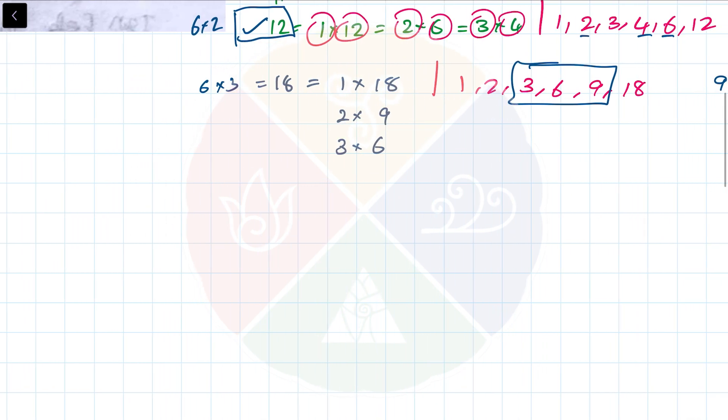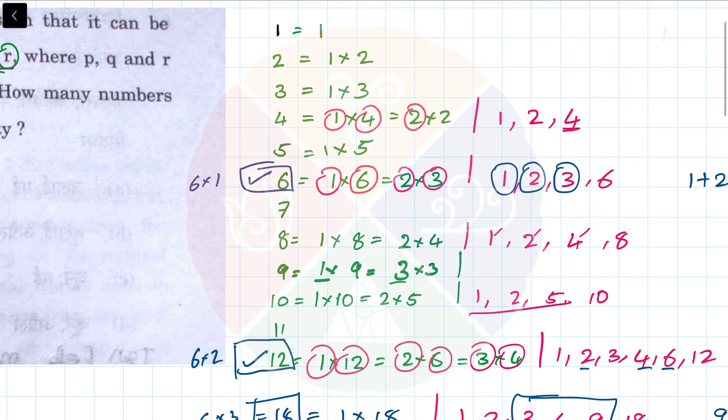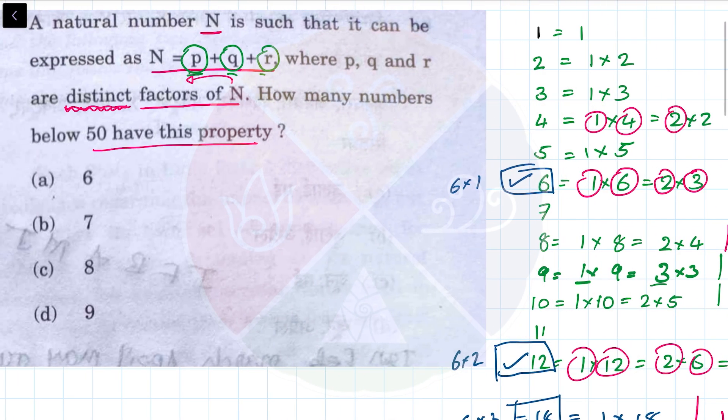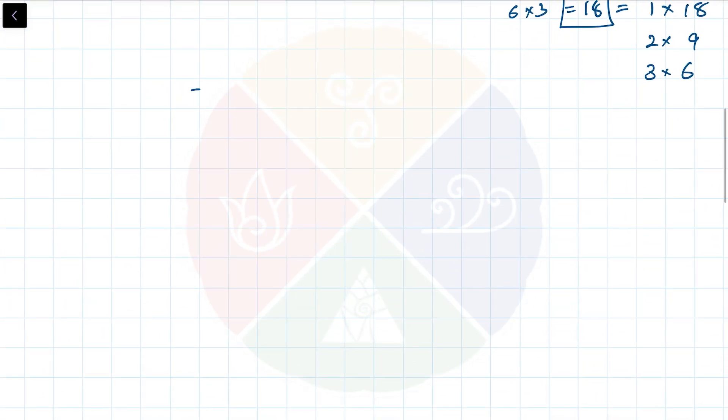I have to see all the multiples of 6 from 1 to 50. If I check the number 50 and divide it by 6, how many times will it go? 9 times 6 will be 54, so one less: 8 times is 48, balance is 2. Therefore 8 numbers will be there.